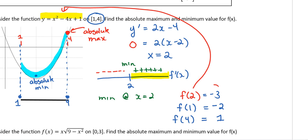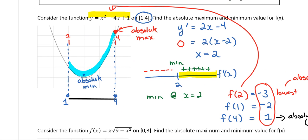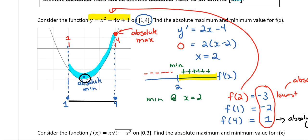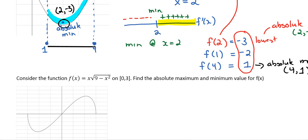Comparing the three values: f(2) = -3, f(1) = -2, f(4) = 1. The lowest is -3, so the absolute minimum is at the point (2, -3). The highest is 1, so the absolute maximum is at the point (4, 1). Going back to the graph, the absolute min is at (2, -3) and the absolute max is at (4, 1).